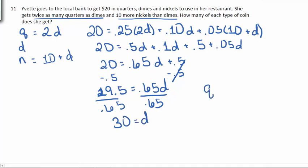So the number of quarters is 2 times d, so we have 60 quarters. The number of dimes was just d, so we have 30 of those. And the number of nickels is 10 plus d, so 40.